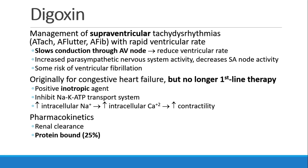Digoxin will slow conduction through the AV node. So even though their atria may be going very quickly, it will reduce conduction through the node and reduce the ventricular rate. We'll see increased parasympathetic nervous system activity, which decreases SA node activity, and there is some risk of ventricular fibrillation with this drug.